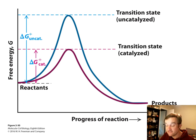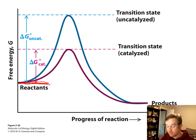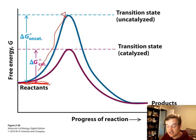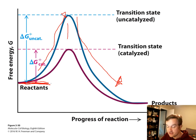A catalyst can lower the activation energy of a reaction. To convert from one reactant to a product, you need an input of energy to reach the transition state that allows the reaction to proceed. The catalyst lowers this activation energy so much less input energy is required for the reaction to proceed.